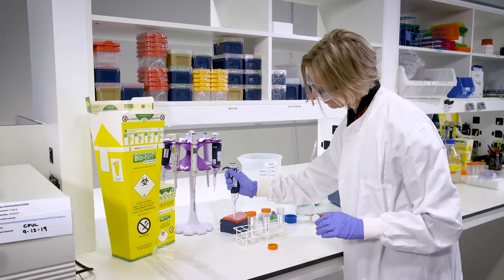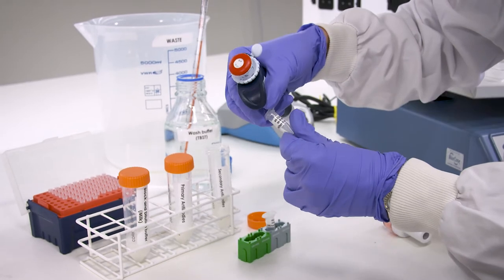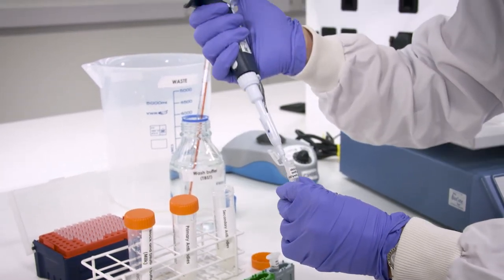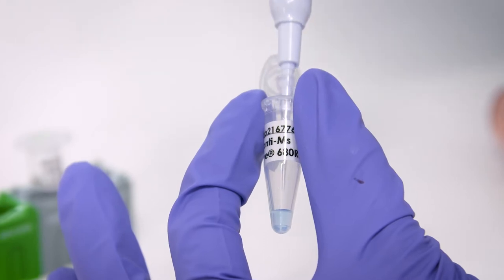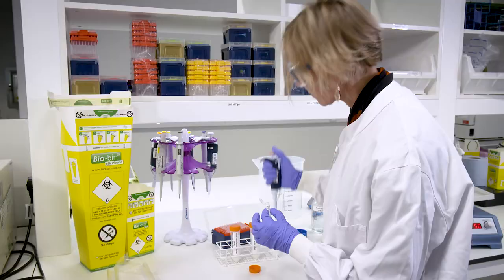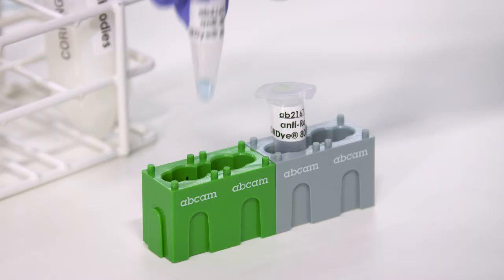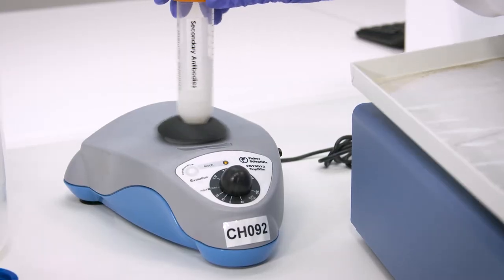Between washes, dilute the secondary antibodies in blocking buffer. The secondary antibodies need to be conjugated to a fluorescent label. For example, IRDYE 680RD and IRDYE 800CW. Ensure that the secondary antibody is thoroughly mixed with the buffer.